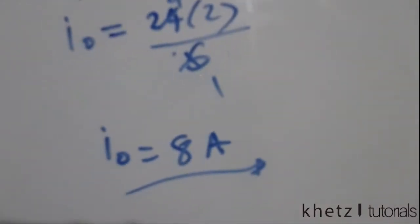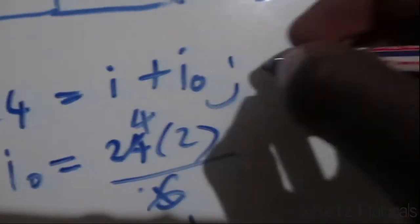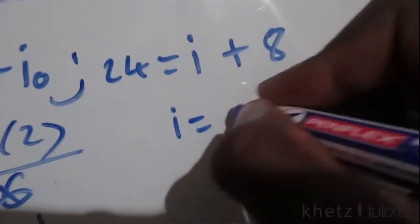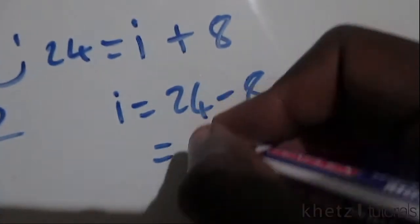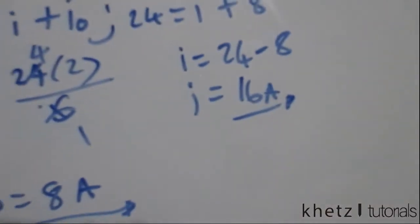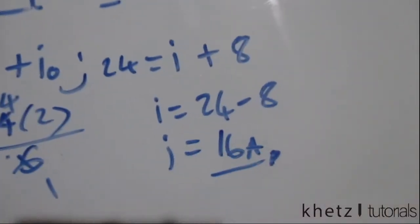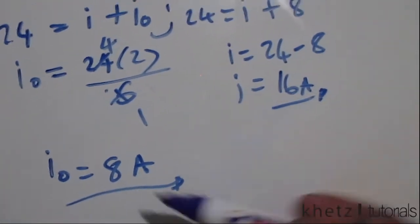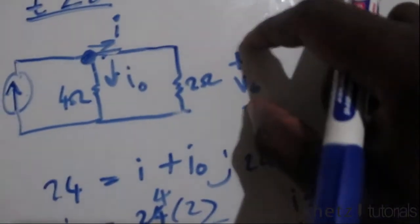Now that we have i_o, since 24 equals i plus i_o, we get 24 equals i plus eight, which means i equals 24 minus eight, so i equals 16 amperes. You can confirm this using current division. These are the two answers for time less than zero: i equals 16 A and i_o equals 8 A.